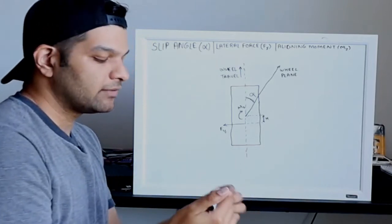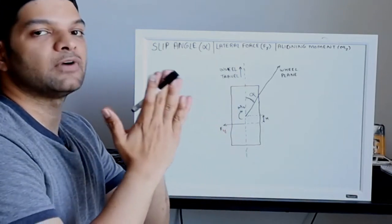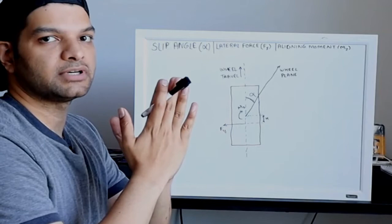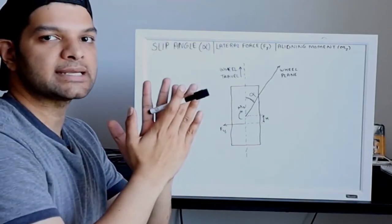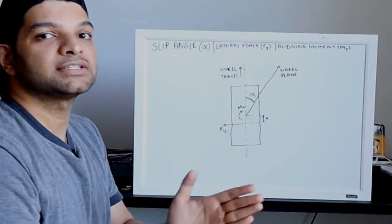And slip angle can be defined as when there's this deformation between the lower part of the tire and the upper or overall tire which is moving in the right direction. So this deformation, the direction...